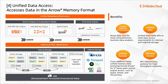We also provide unified data access with the Arrow memory format. With unified data access, we provide unified metadata and permissions, which break data silos for more comprehensive business data analysis. We provide unified APIs with unified read and write APIs to meet data access requirements for internal and external storages. We also provide unified formats with the cross-platform Arrow memory data exchange format for third-party open-source engines such as Spark, Presto, and TensorFlow. We have efficient access with RPC transmission protocols for high-throughput scenarios.